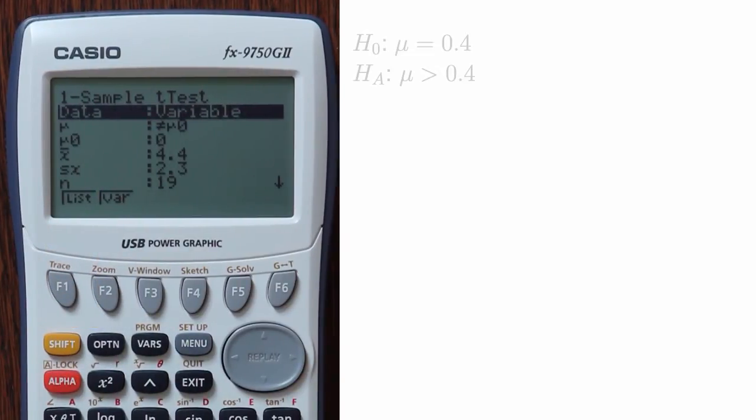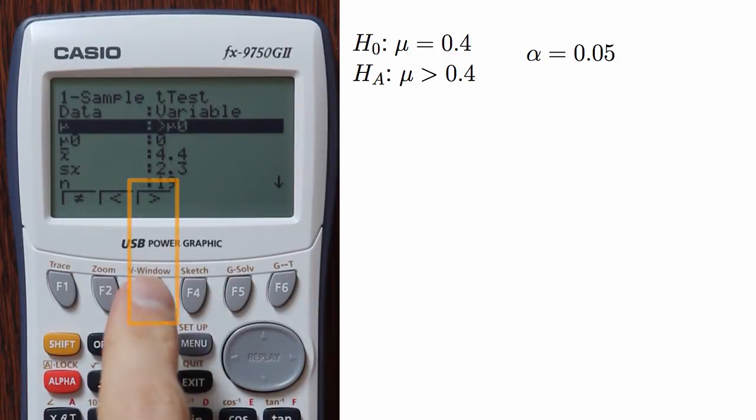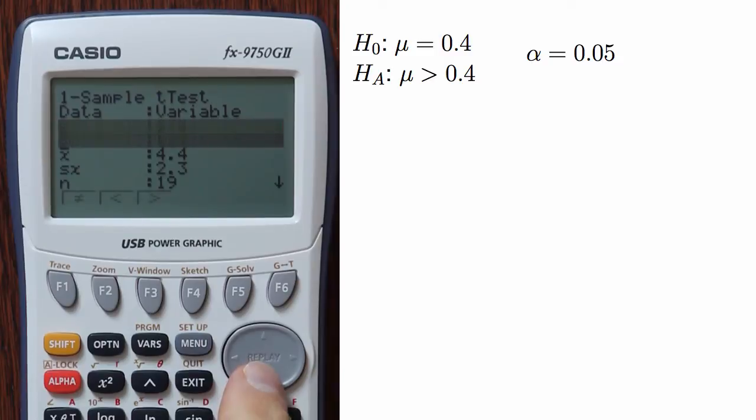Suppose that I wanted to test the one-sided hypothesis to evaluate whether the mercury content exceeds the legal standard of 0.4, which I'll test at a 0.05 significance level. I would first specify the sidedness of the alternative hypothesis. Here I choose greater than, since I'll be checking whether the population mean is above a certain threshold.